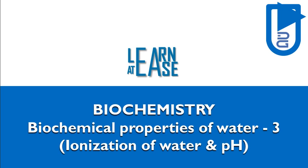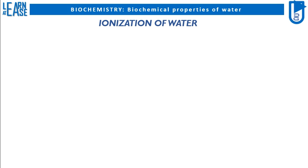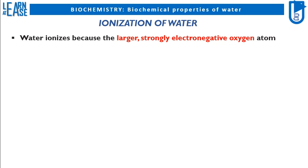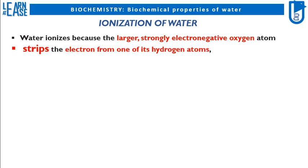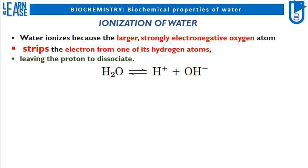Welcome to my YouTube channel, Learn at Ease. In this video, I will discuss a topic in biochemistry: biochemical properties of water, part 3 — ionization of water and pH. Water ionizes because the larger, strongly electronegative oxygen atom strips the electron from one of its hydrogen atoms, leaving the proton to dissociate. The equation shows the theoretical dissociation of a water molecule.